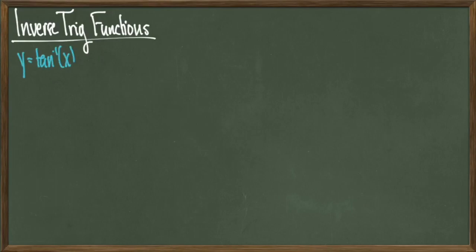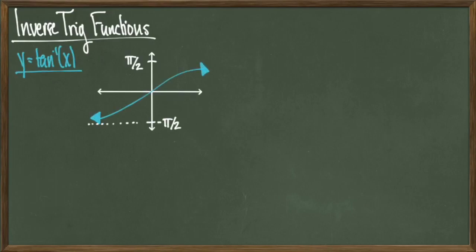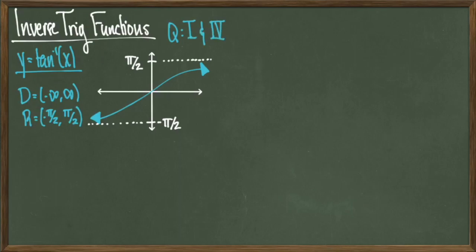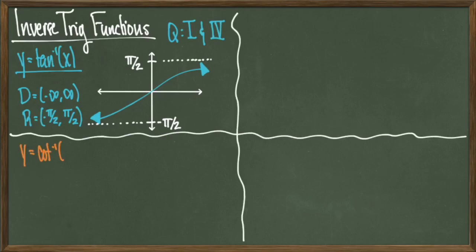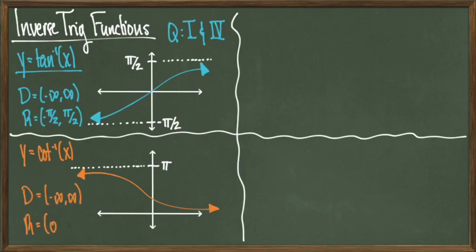I'll give the remaining inverse trig functions in an abbreviated way. The graph for y equals tangent inverse of x has domain negative infinity to infinity and range negative pi over 2 to positive pi over 2, not including those endpoints. This outputs angles in quadrants 1 and 4. Y equals cotangent inverse of x has domain negative infinity to infinity and an open range from 0 to pi, outputting angles in quadrants 1 and 2.